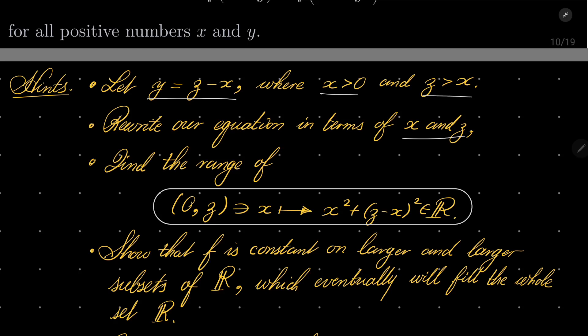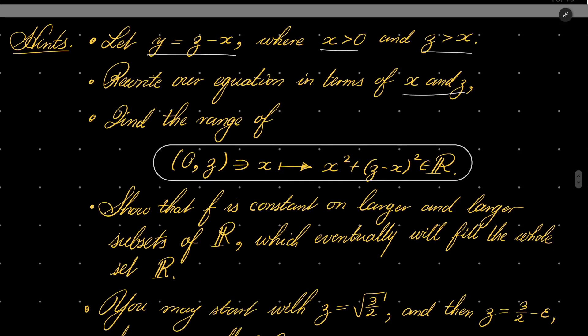And now, the somehow unusual part. Show that our function is constant — spoilers, it is constant, the only solution. The set of solutions consists of constant functions. Show that f is constant on larger and larger subsets of real numbers, which eventually will fill the whole set of real numbers. You will see, it's a nice step.